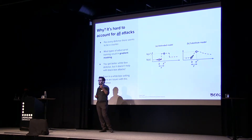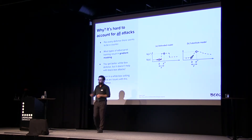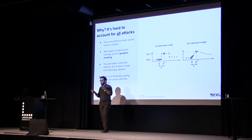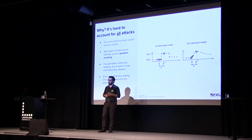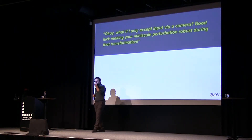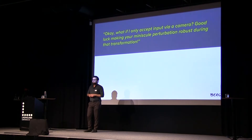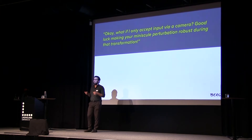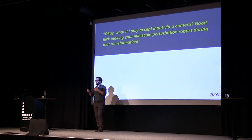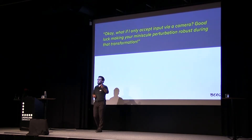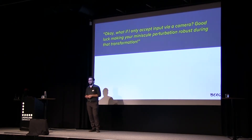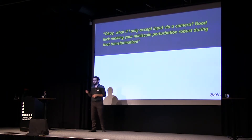There are methods to defend against white box attacks but not black box attacks. Even in white box settings there are issues with these defenses. You might say: in practice we won't have a clean API — we'll take images with cameras. If you're adding this small noise, it's probably going to get distorted and disappear through all those camera transformations. So that should be fine in practice.